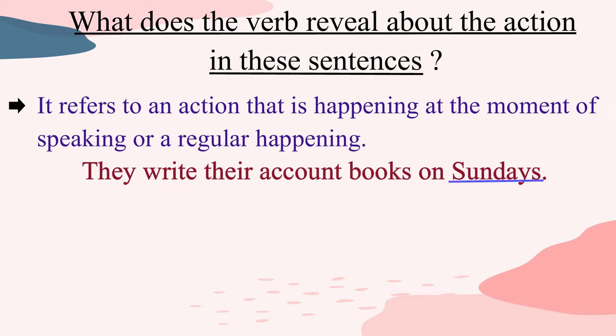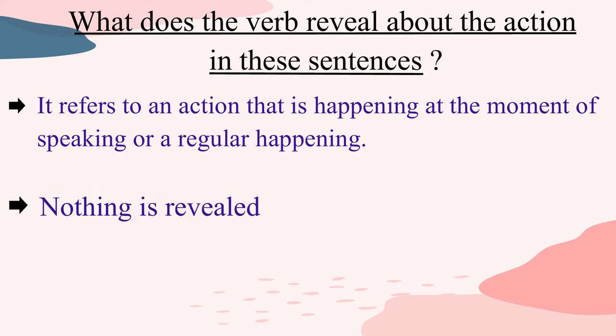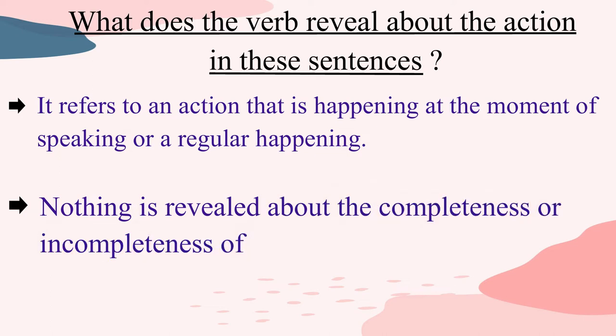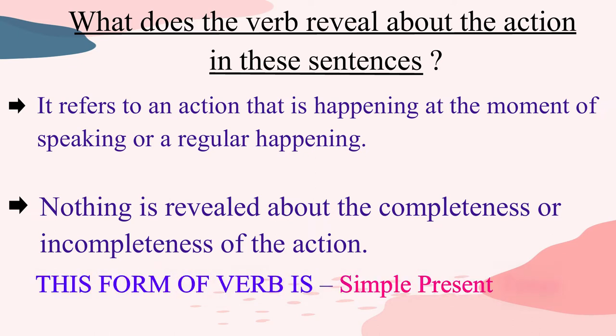It happens every Sunday. The sentences also show that nothing is being revealed about the completeness or incompleteness of the action. Such sentences where we do not know whether the action has become complete or it still remains incomplete are said to be in simple present tense.